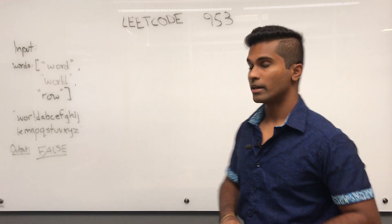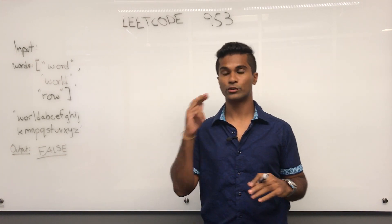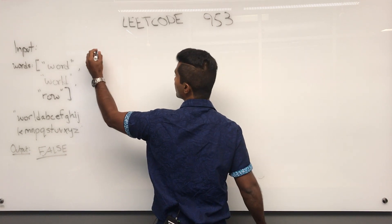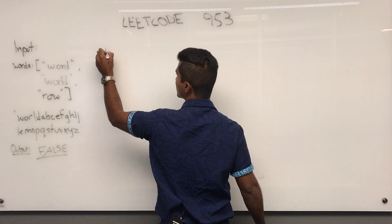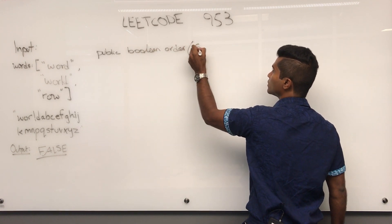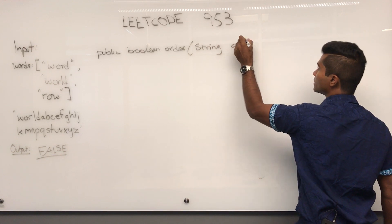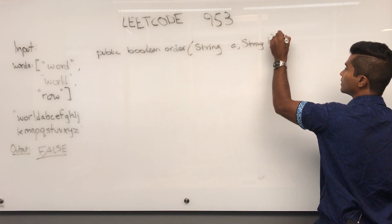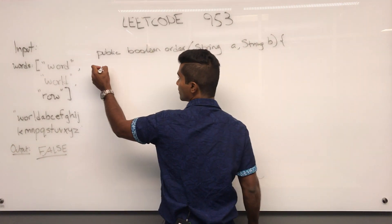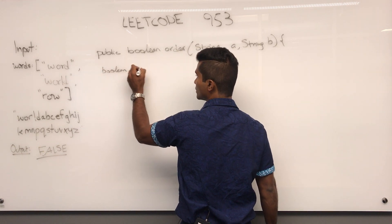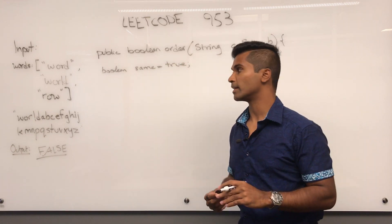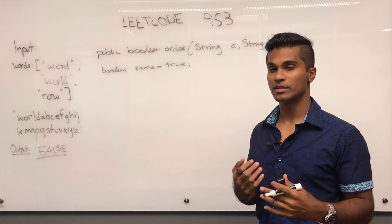Now let me write a helper method that returns true or false for whether two given words are in alphabetical order. It's a public boolean called 'order' taking String a and String b. I'll initialize a boolean called 'same' to true. The idea is I'm assuming both words are the same until we find the first letter that differs.